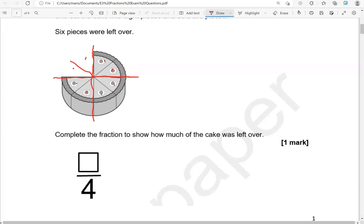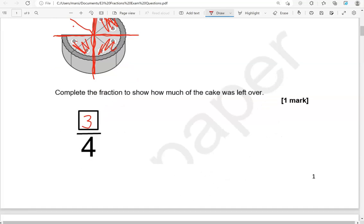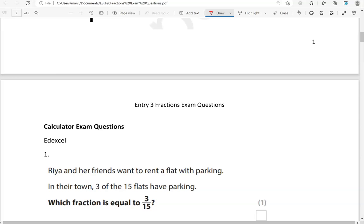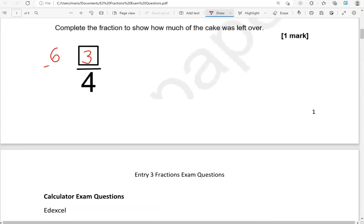If we split the cake into four parts, into quarters, then what is left is three quarters. If I just write it as six-eighths here as well, you can see that eight has been halved and six has been halved as well.